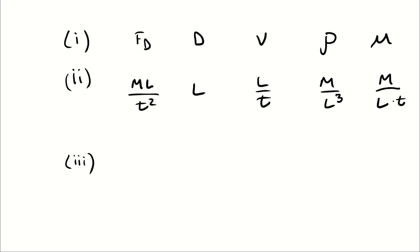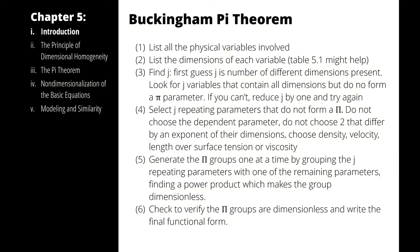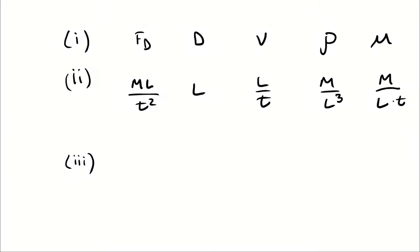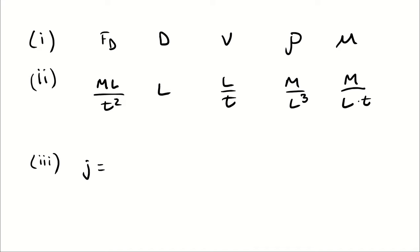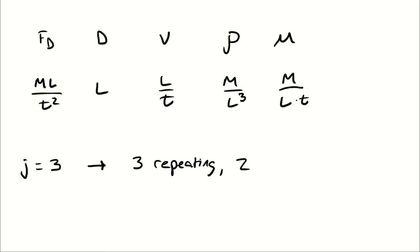Step three is to figure out a J value — the number of repeating parameters. My rule of thumb is to start with the number of dimensions that appear. I have mass, length, and time appearing, so I'm starting with three. That means I have three repeating variables and two non-repeating variables, giving me two pi groups.